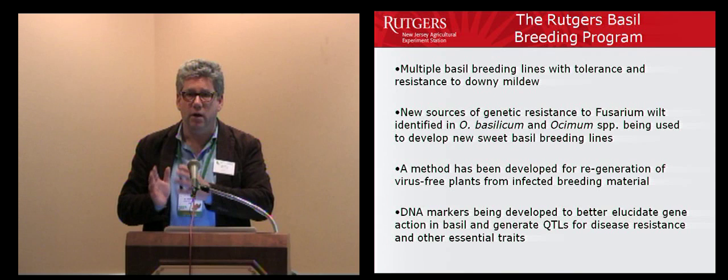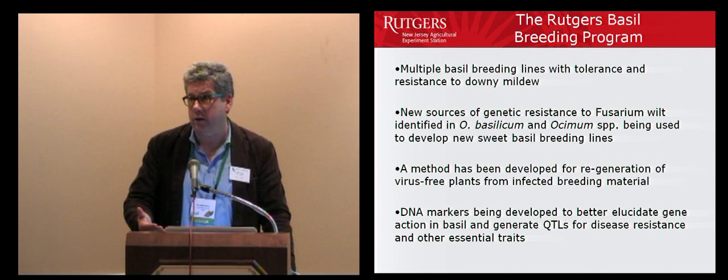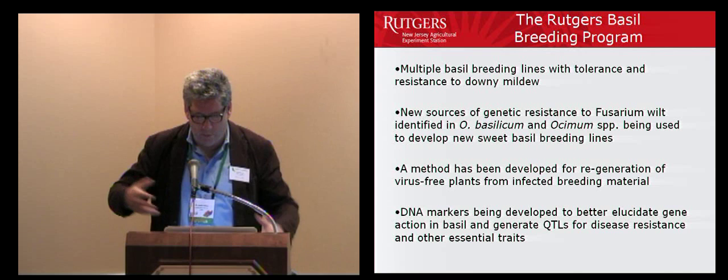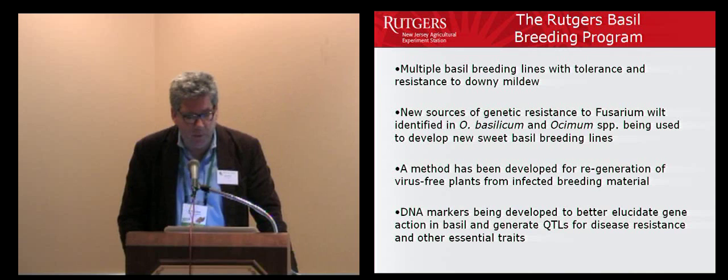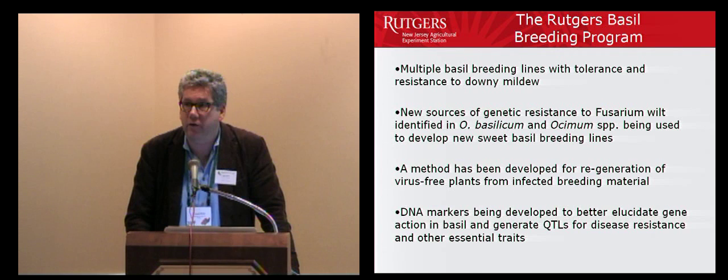Our key goal is to understand the genetics and the breeding, and to the extent that we can have lines to release — that's great. To the extent that we can help everyone find genetic resistance is really our overall goal. We have multiple breeding lines with tolerance and resistance to downy mildew. We've also found new sources of genetic resistance to fusarium wilt identified in Ocimum basilicum as well as other Ocimum species, and we're using that to develop new sweet basil breeding lines.